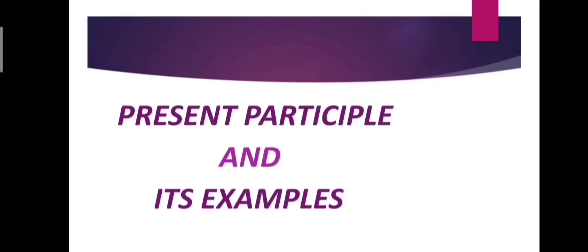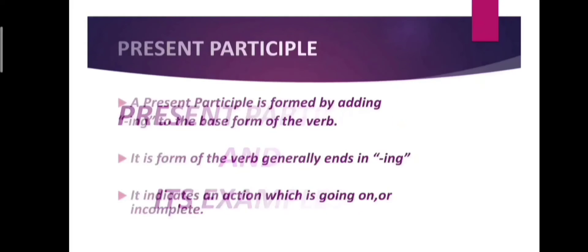Let's get started with the present participle first. Present participle is formed by adding ing to the base form of the verb. That is, form of the verb generally ends in ing. It indicates an action which is going on or incomplete.